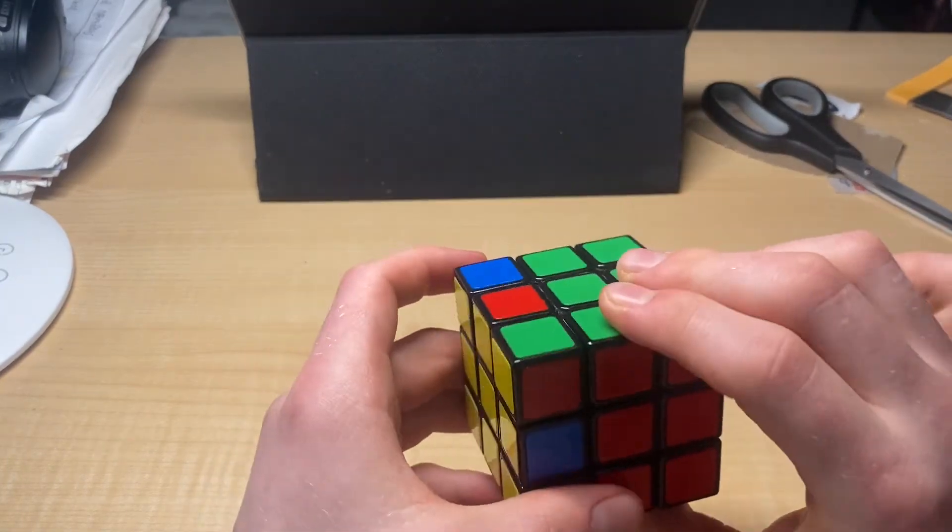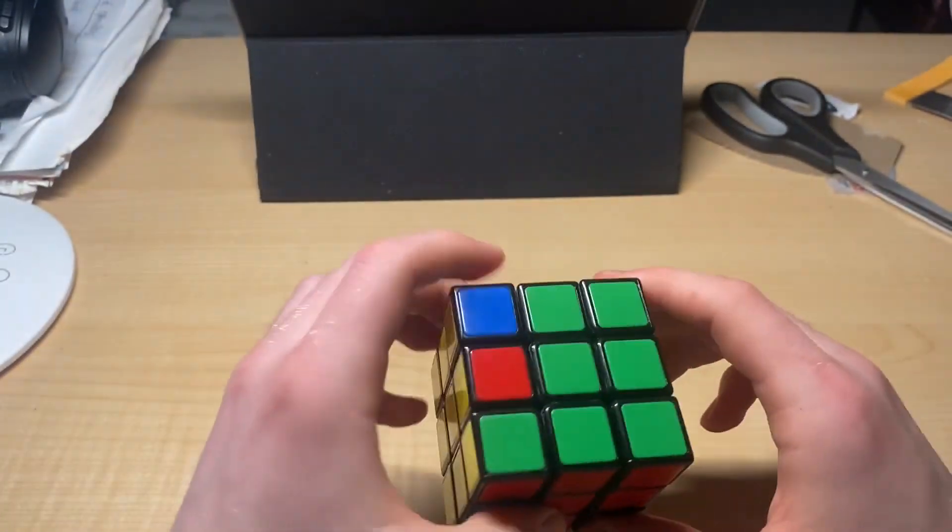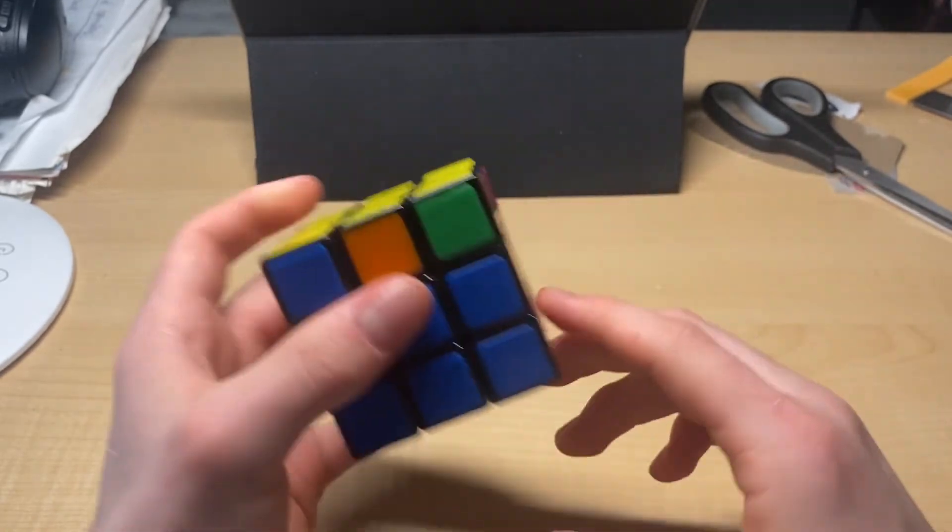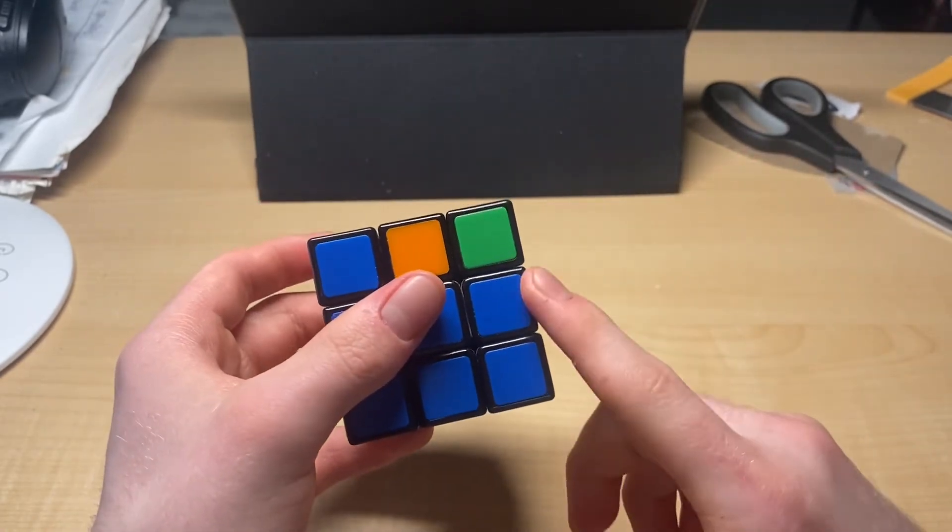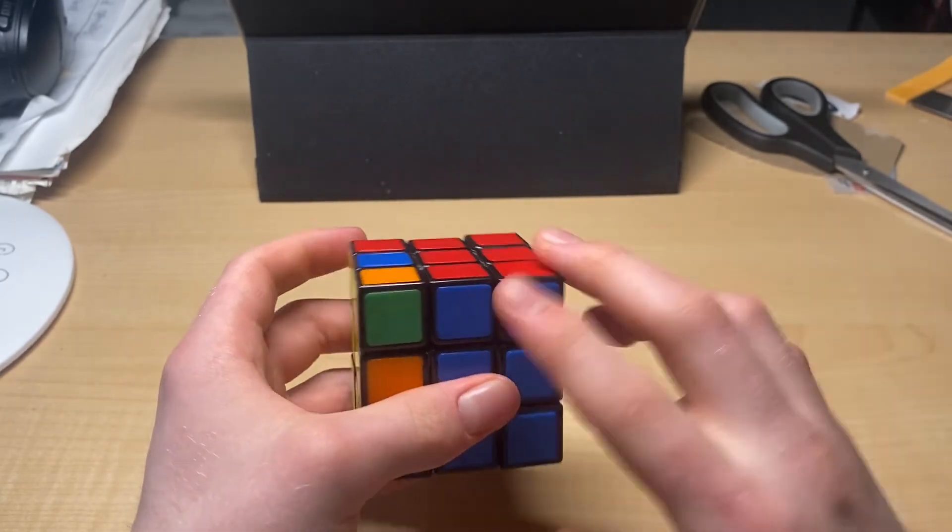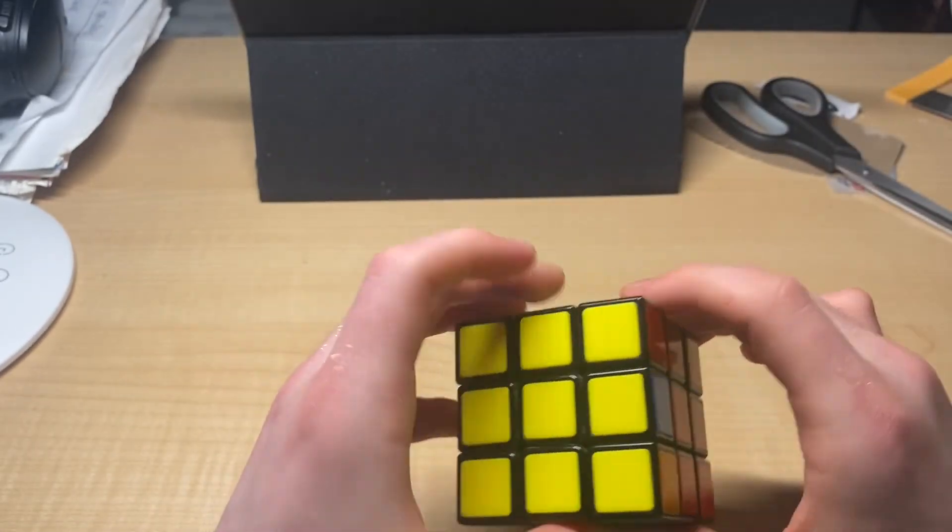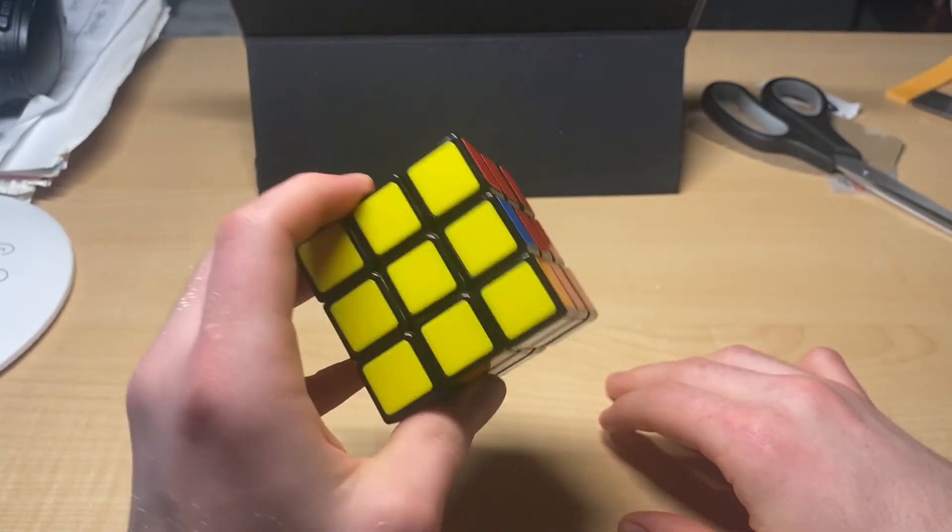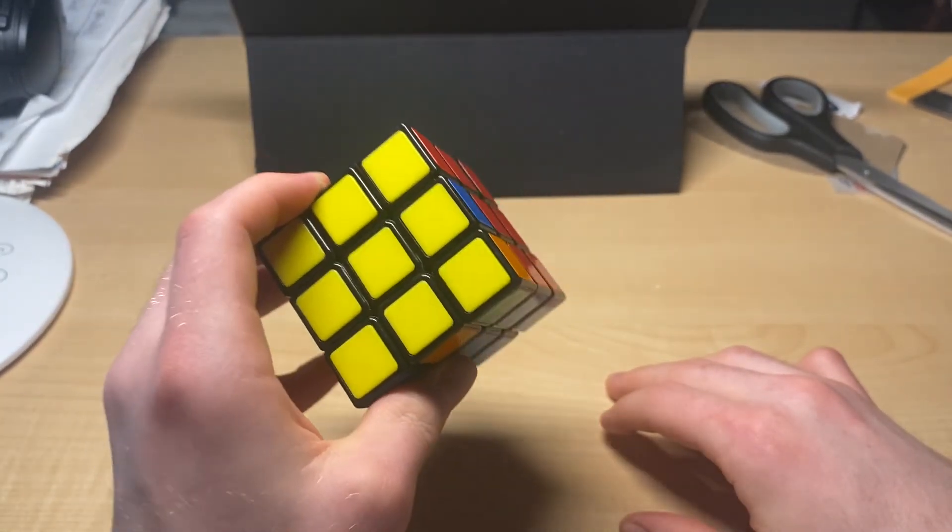Just keep at it. If you're still confused with the white cross or the white corners or the edge pieces or F2L, you can just keep doing it separate. Just keep at it. You'll get there. Practice, practice, practice.